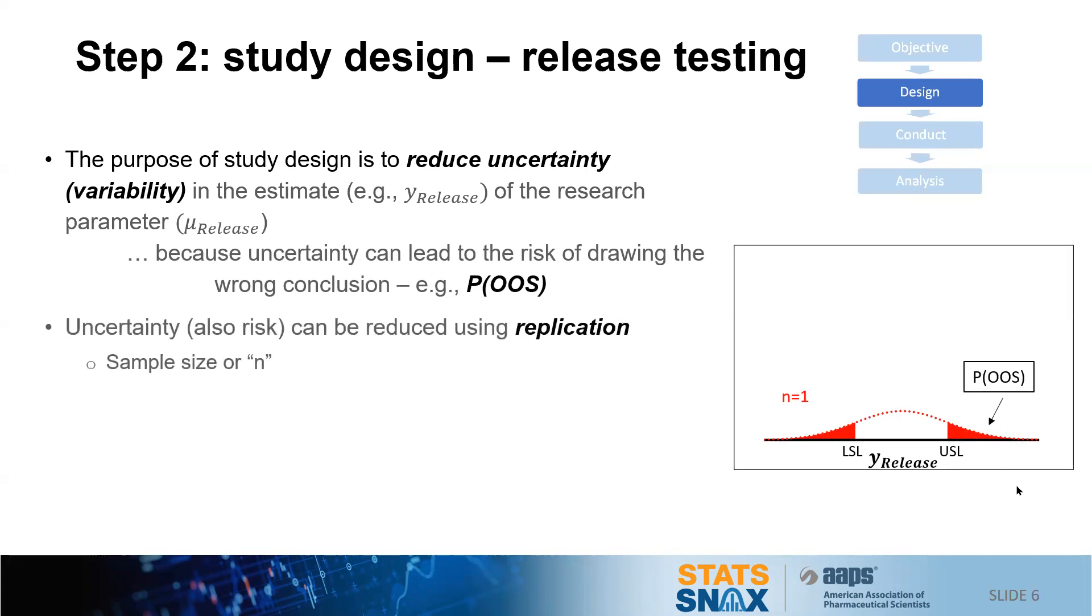Now uncertainty, also risk, can be reduced using replication, and in statistics we call that sample size determination or determining n, other than in this case n equal to 1. And if we increase n, we might find that the risk of OOS is decreased with this increased sample size. So again, going from n equal to 1 to n equal to 4, the area, in this case the blue-shaded area, is much reduced over the red-shaded area that we saw before. Thus we can reduce variability and risk simultaneously with the increase in sample size.